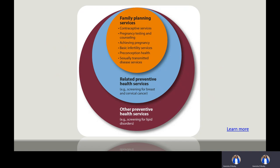The middle blue circle represents related preventive health services appropriate to deliver in the context of family planning site visits, even if they don't directly contribute to achieving or preventing pregnancy — including screenings for breast cancer and cervical cancer. The outer circle includes other preventive health services such as screenings for eating disorders, skin cancer, colorectal cancer, and osteoporosis. Although important to primary care, these have no direct link to family planning — this is the point at which you make a referral to a primary care provider.